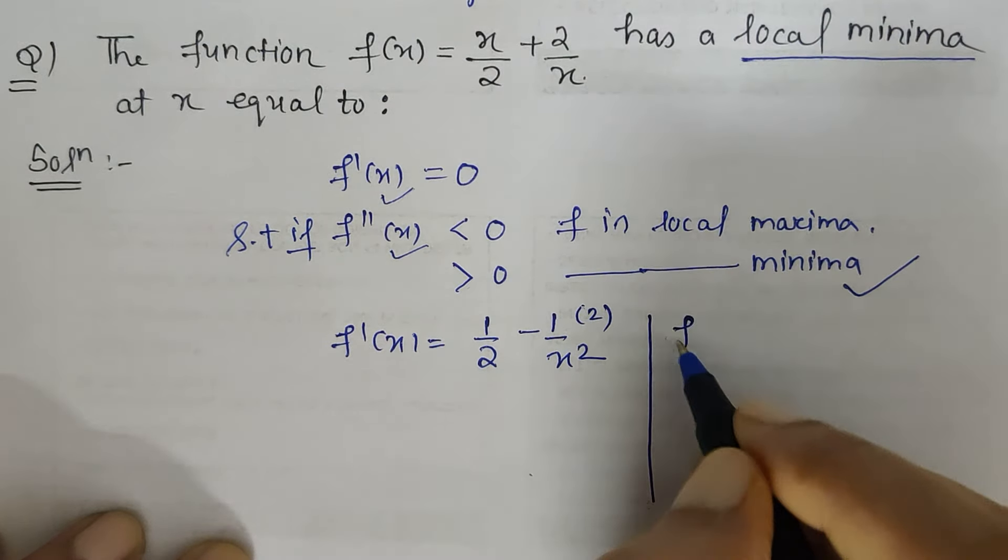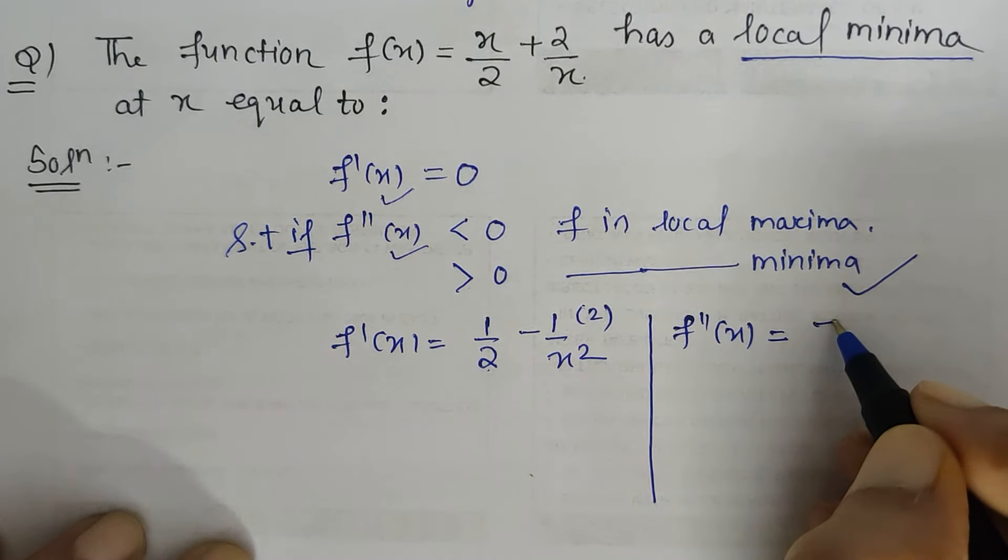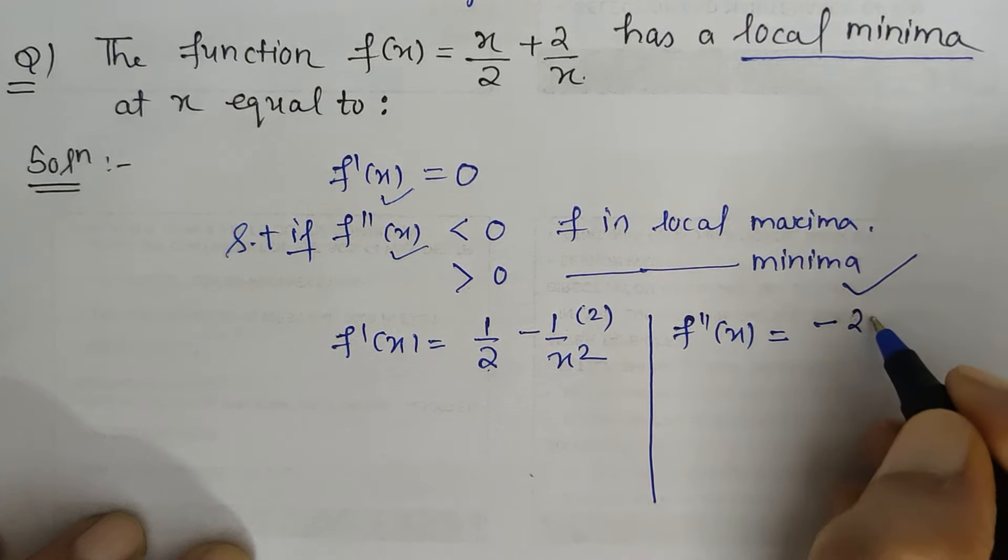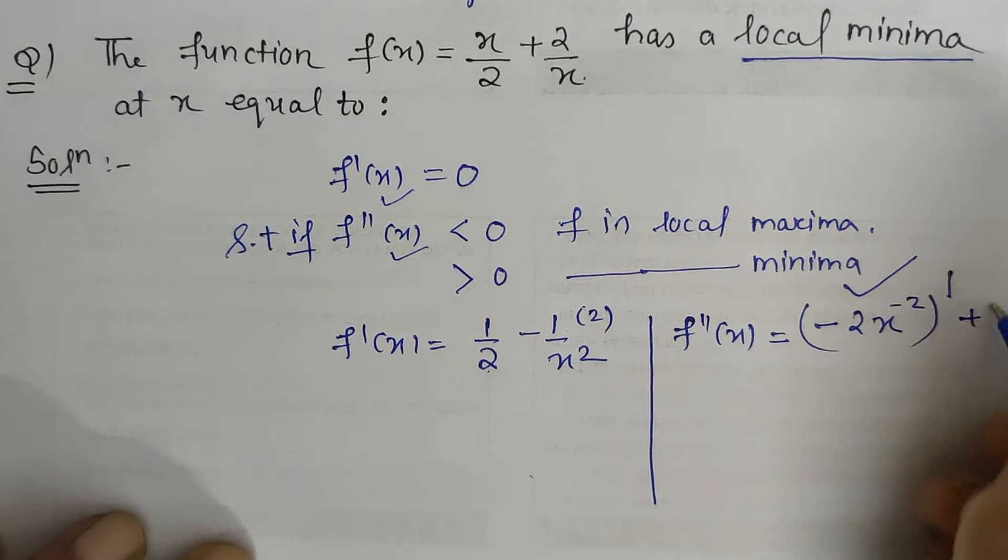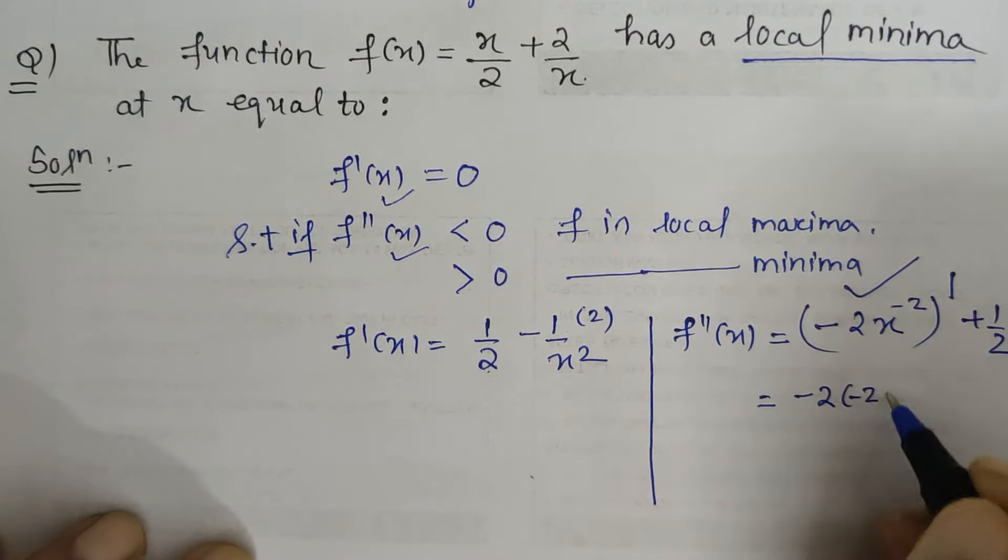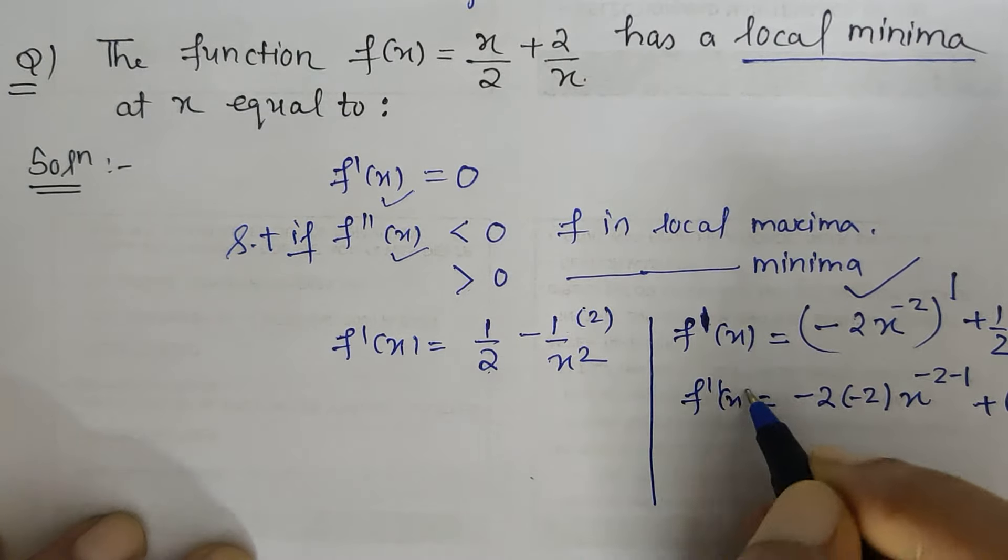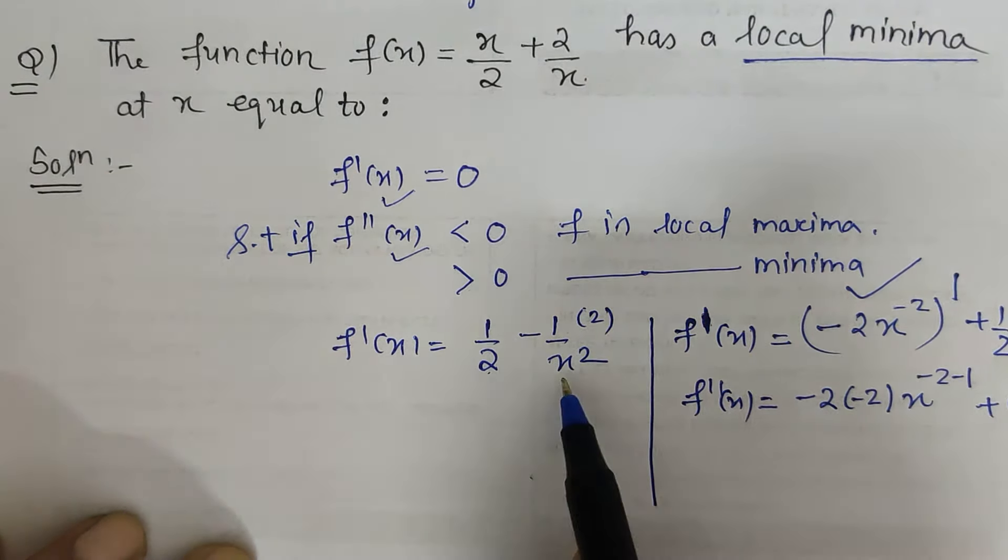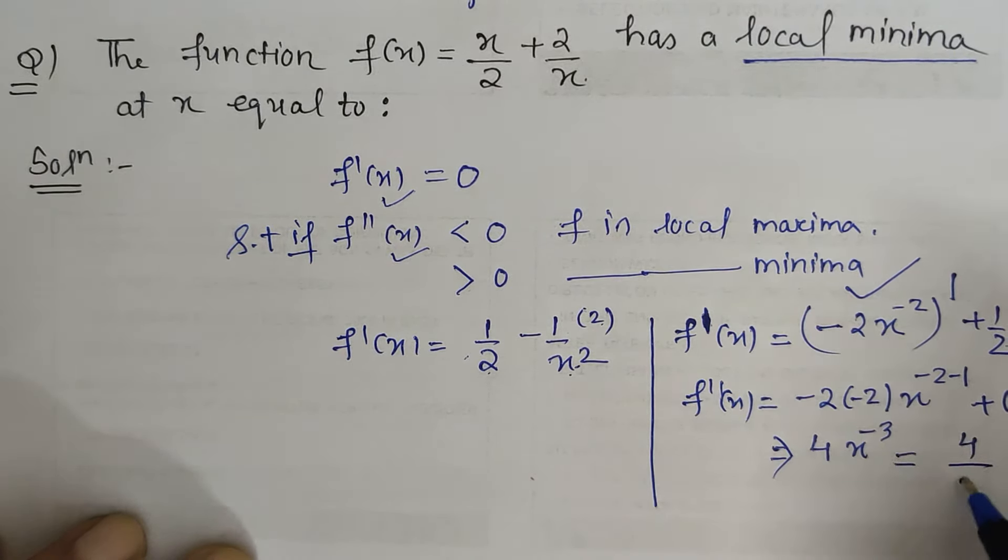Now if I re-differentiate to get f''(x), this becomes 0 because it is a constant term. Here I can write this as minus 2x^(-2). On differentiating this, I get minus 2 times minus 2x^(-2-1). This gives us 4x^(-3), or it can also be written as 4/x³.